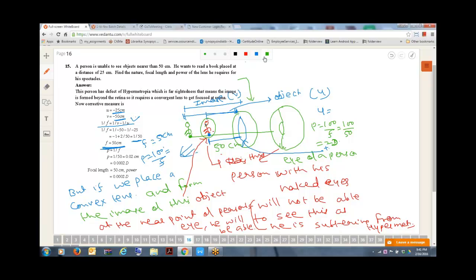If you remember, I told you yesterday that for a convex lens, P is positive, for a concave lens, P is negative. Any doubt for anybody?